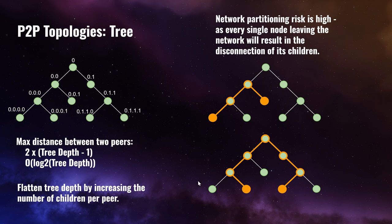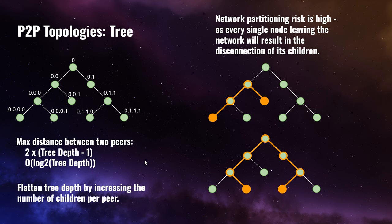As the tree grows, the performance only degrades by log two rather than by n. So if you go from 8 to 16, or from 16 to 32, or from 32 to 64 peers in the network, the distance between any two nodes in the tree only increases by one for every time you double the number of peers. This is good scalability for a peer-to-peer network.